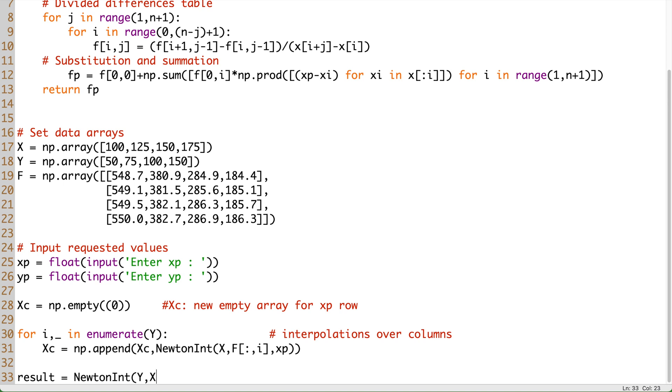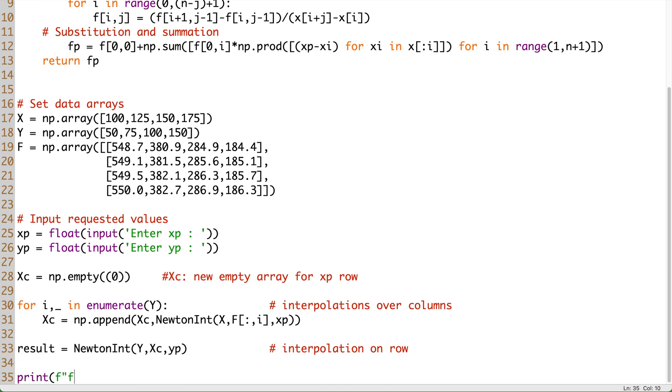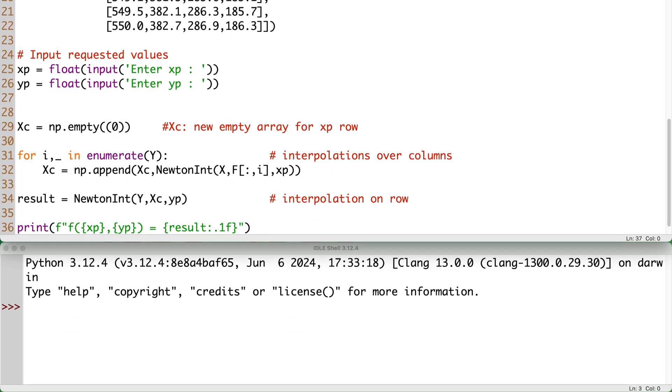Next, Newton's interpolation function is called for one last time to calculate the value of the new row xc corresponding to yp. Finally, the result is output by using a formatted print. Now, let's test the code and see the output.